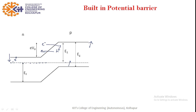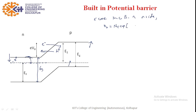The electron concentration in the conduction band on the n-side is: Nn = Nc · exp(−(Ec − Ef) / kT), where Nc is the number of energy levels in the conduction band. Only a fraction of these electrons can cross the junction and enter the p-region. The electron concentration on the p-side is: Np = Nc · exp(−(Eg + Ev0 − Ef) / kT), where Ev0 is the built-in potential energy and Eg is the bandgap. Taking the ratio Nn/Np, Nc cancels and we get: Nn/Np = exp(Ev0 / kT).